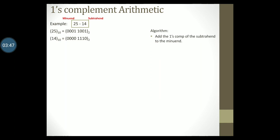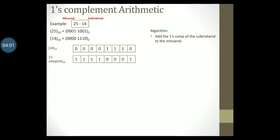The first step tells us to add the 1's complement of the subtrahend to the minuend. The subtrahend here is 14, with binary representation 00001110. We find its 1's complement by inverting the bits, getting 11110001. The minuend is 25, represented in binary as 00011001. We now add these two numbers together.